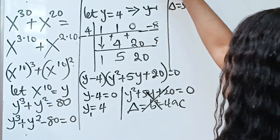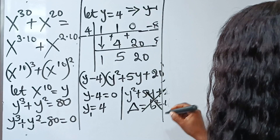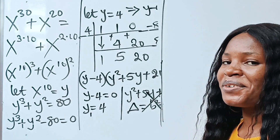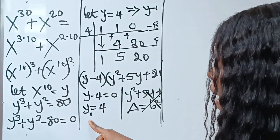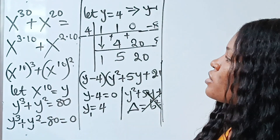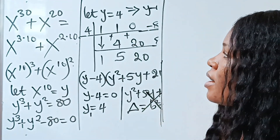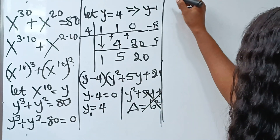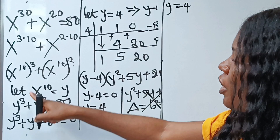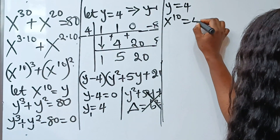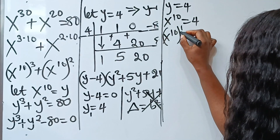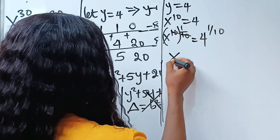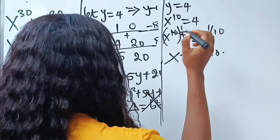If this is the first time you're on this channel, please subscribe and turn on your notification bell. Now, recall that y equals x to the power of 10. So x to the power of 10 equals 4. To get x, I raise both sides to the power of 1 over 10. The 10 and 1 over 10 cancel on the left, giving x equals 4 to the power of 1 over 10.